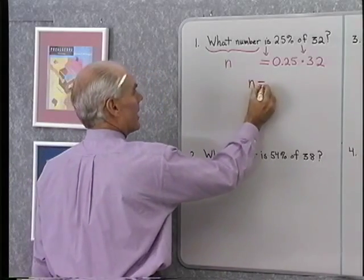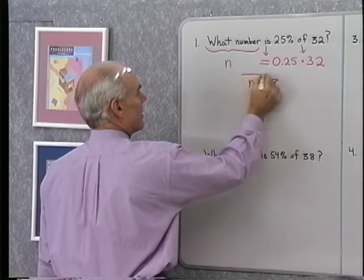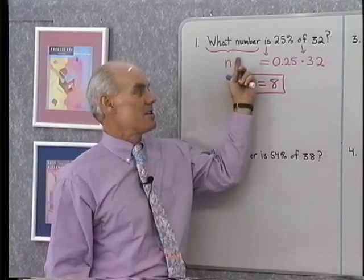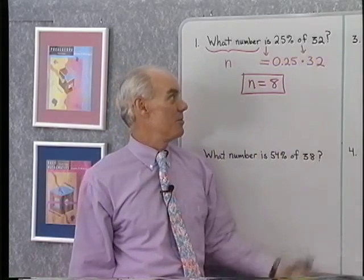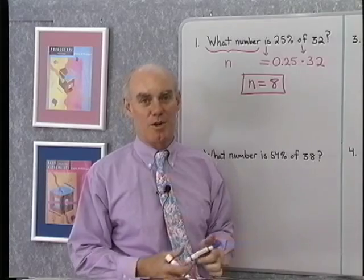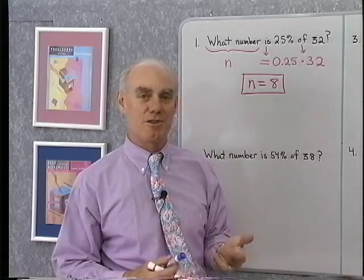The next thing is simply to multiply. When I multiply, I end up with 8. So n is equal to 8. So 8 is the number that's 25% of 32 and that makes sense, because 25% is the same as 1 fourth and isn't 1 fourth of 32 the same as 8?